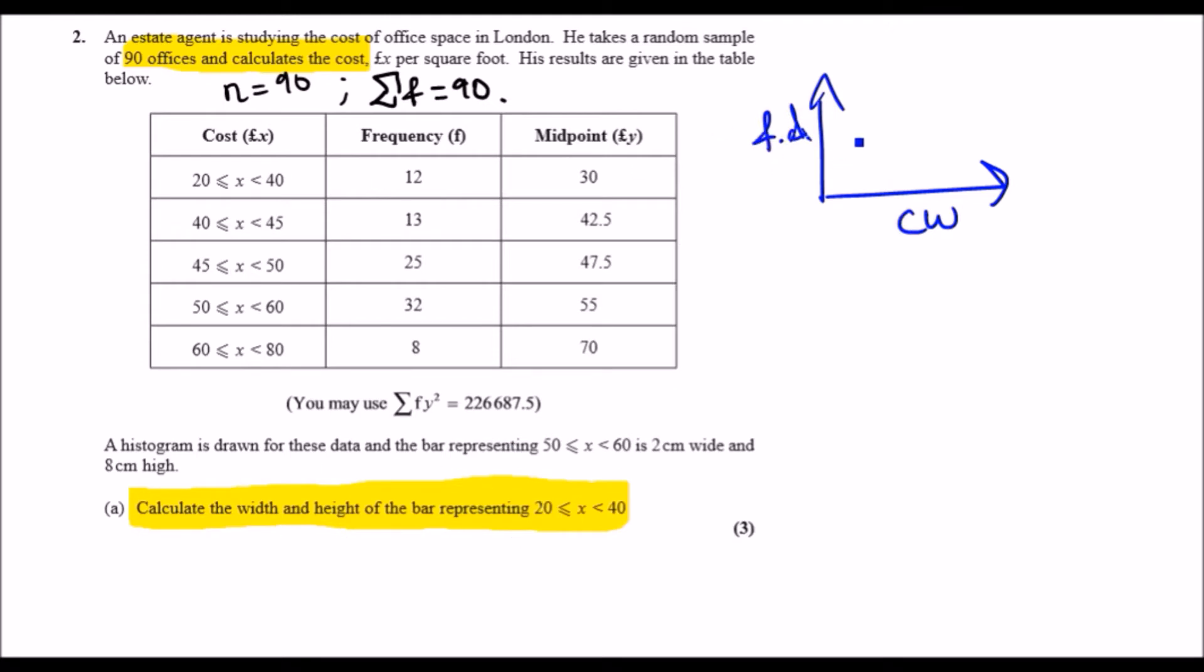And then if you think about the bar inside, this would be the frequency. We can think of it like an area of a rectangle. We can say that class width times height equals area, or class width times frequency density equals frequency. This formula I always use when I do histogram questions. I recommend you put this down. This is very useful.